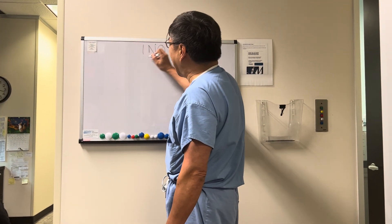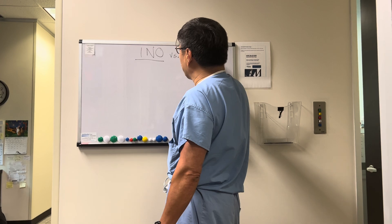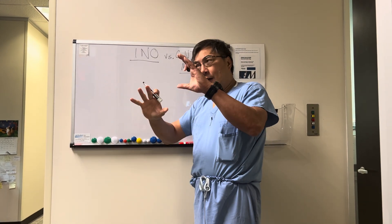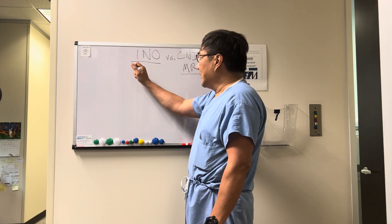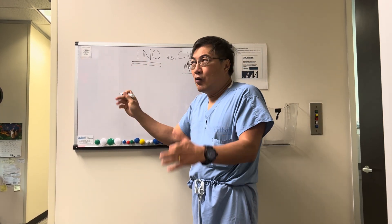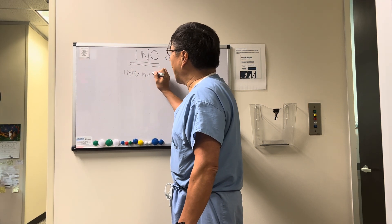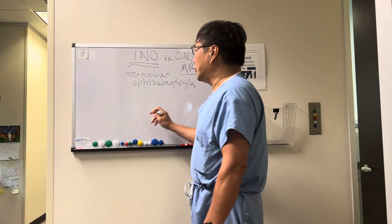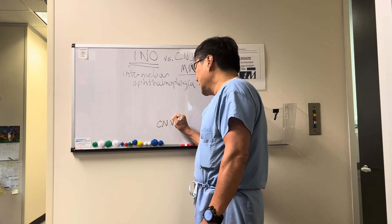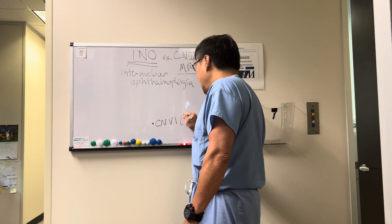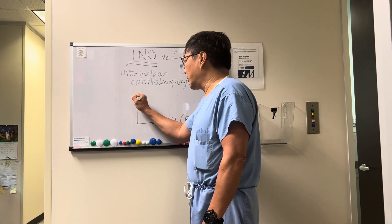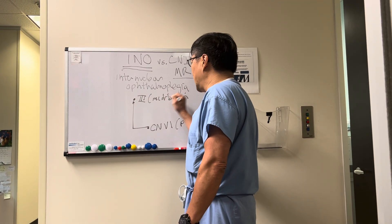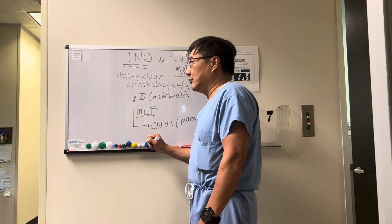We're going to talk about the difference between an INO — internuclear ophthalmoplegia — versus a partial cranial nerve 3 palsy involving the medial rectus. If you have an upgaze or downgaze problem, ptosis, or anisocoria, you're not dealing with an INO. The INO involves the connection between two nuclei: cranial nerve 6 in the pons, which is the final common pathway for horizontal gaze, and the contralateral CN3 subnucleus in the midbrain. That connecting structure is called the medial longitudinal fasciculus (MLF).